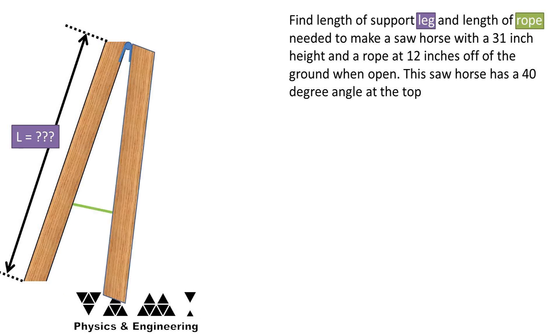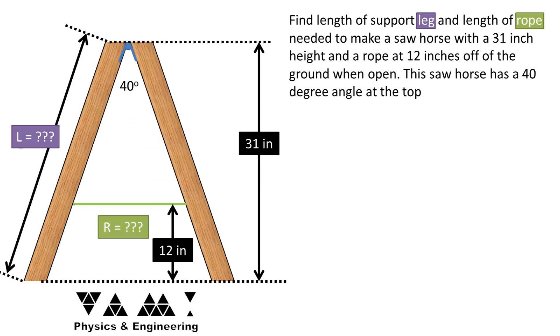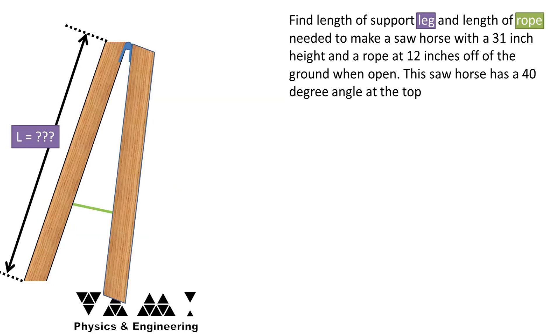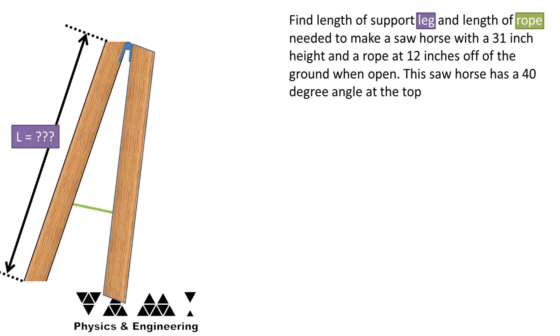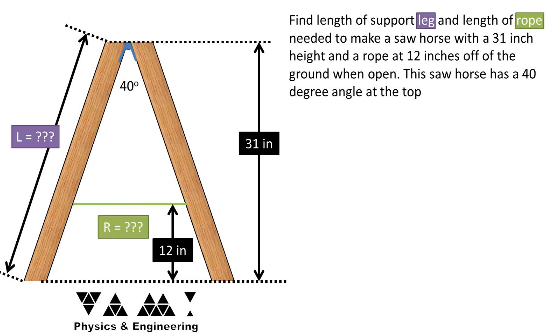I was thinking about making a sawhorse and thought it would be an excellent trigonometry problem to go over. We want to find the length of the support leg and the length of rope needed to make a sawhorse that is 31 inches high and the rope sits at 12 inches above the ground when open. The sawhorse has a 40 degree angle at the top. How do we go about solving this one?